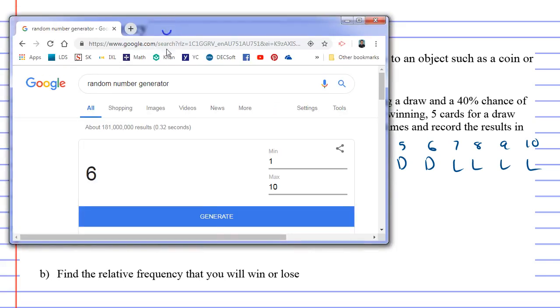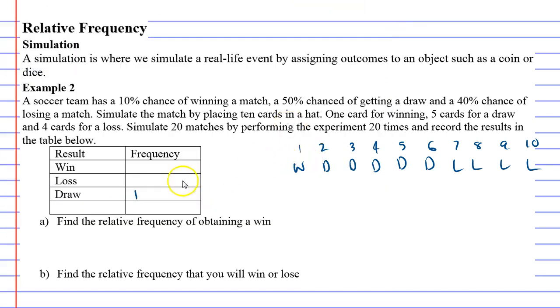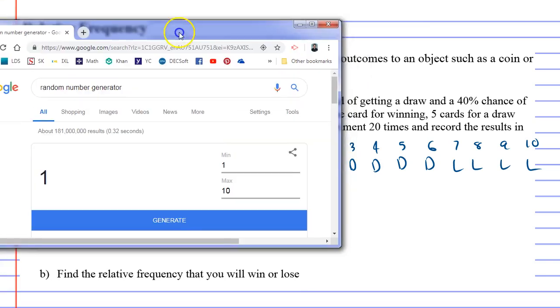I'll do another one. Generate. We've got the number 1, which is a win! So that's good - our team got a win even though it's only a 10% chance of happening. Let's keep going until we get one that's a loss.